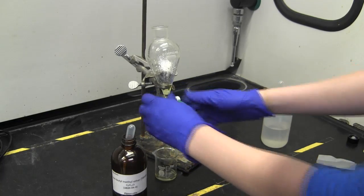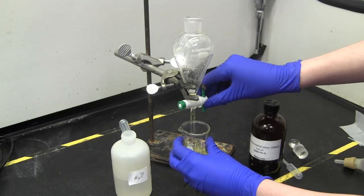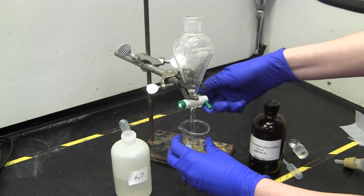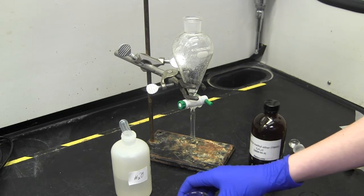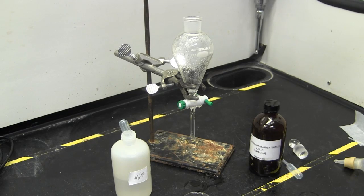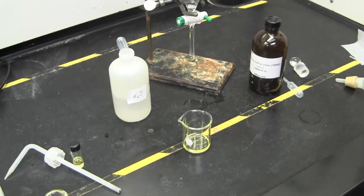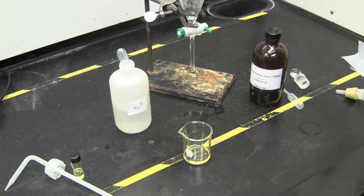To determine which layer your unknown is in, you know that glucose is the impurity and that it is soluble in water. This means that your unknown will be found in the TBME layer. This layer is called the extract. Determine which layer is which by finding the densities of the solvents. The lighter one is usually on top.